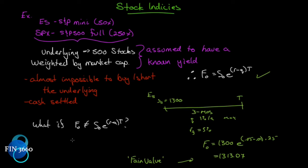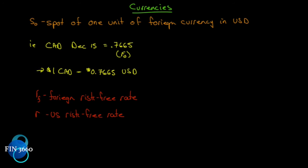You can get well into the 99% correlation range by grabbing a basket of 50 or 60 of the more liquid, higher-volume stocks, and they'll get you as close to the real thing as you'll get. Alright, let's move on to currencies.